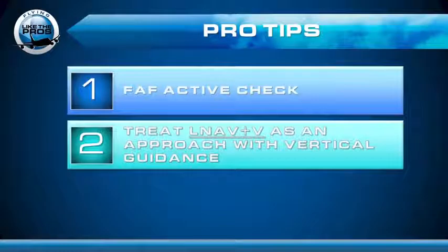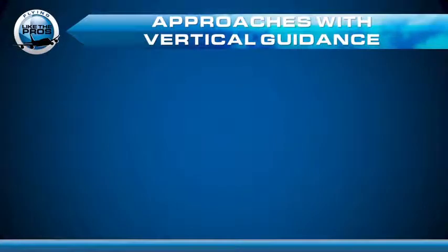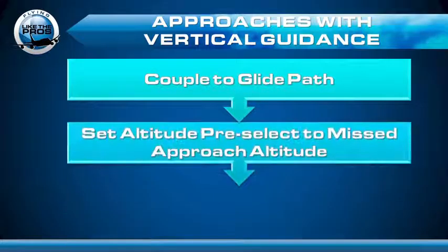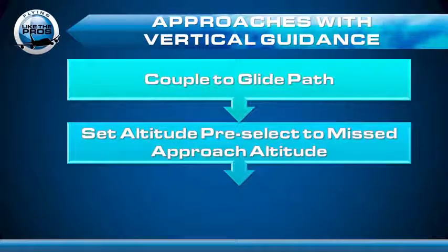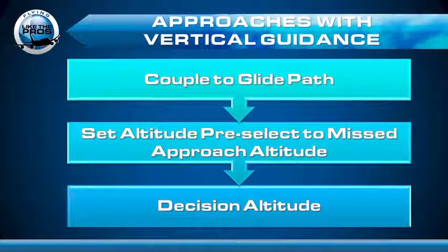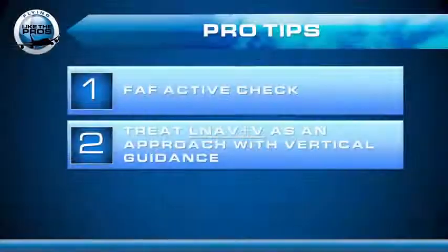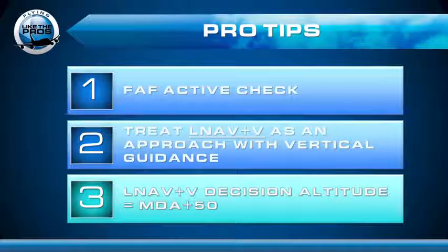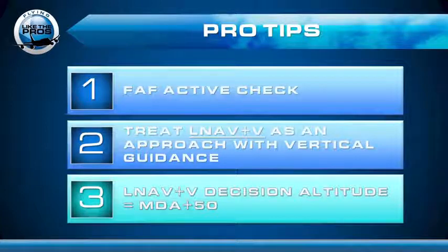The fix is pro tip number two: commit to treating LNAV+V as an approach with vertical guidance. Plan to couple to the advisory glide path, set the altitude pre-select to the missed approach altitude — just as you would on an ILS or LPV approach — and fly it as if you were flying to a decision altitude. But the big caveat: you absolutely cannot dip below MDA when executing the missed approach. That leads us to pro tip number three: create your own LNAV+V decision altitude by adding 50 feet to the MDA, which should give you enough room to start the missed approach without dipping below MDA.